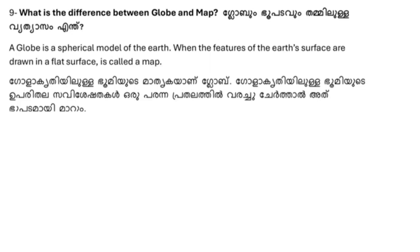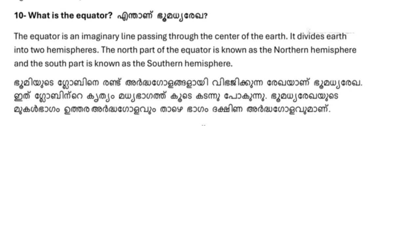What is the difference between globe and map? A globe is a spherical model of the earth. When the features of the earth's surface are drawn on a flat surface, it is called a map. The equator is an imaginary line passing through the center of the earth. It divides the earth into two hemispheres. The north part of the equator is known as the northern hemisphere and the south part is known as the southern hemisphere.